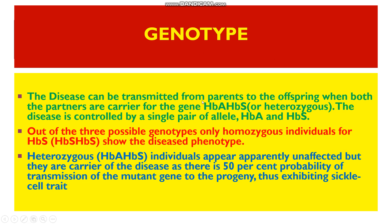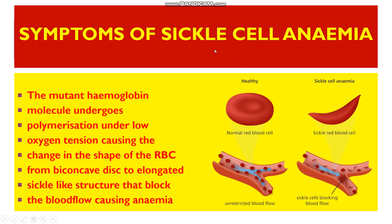The disease can be transmitted from parent to offspring only if both partners are carriers (HBA/HBS). Of the three possible genotypes, only homozygous individuals show the diseased phenotype, while heterozygous individuals act as carriers. Here you can see a healthy biconcave red blood cell and a sickle-shaped RBC. The sickle-shaped RBC blocks blood flow, resulting in anemia.